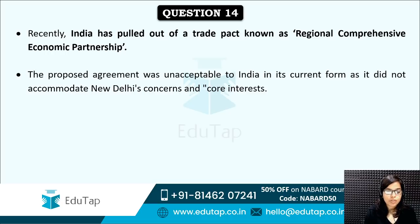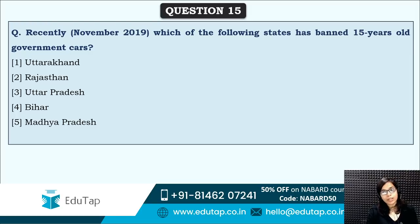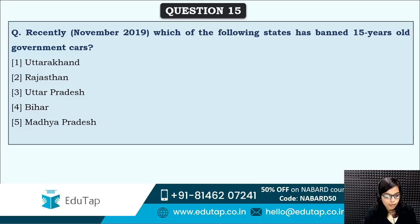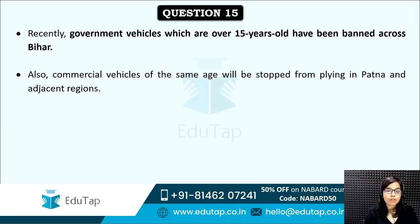Next: which of the following states has banned 15-year-old government cars? A state government has banned cars older than 15 years — this measure was taken to control pollution and reduce emissions from old vehicles. The correct answer is option four — Bihar. Bihar has banned 15-year-old government cars, and all commercial vehicles of the same age will be stopped from plying in Patna and adjacent regions.